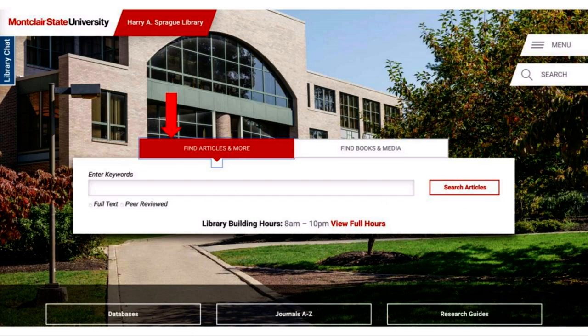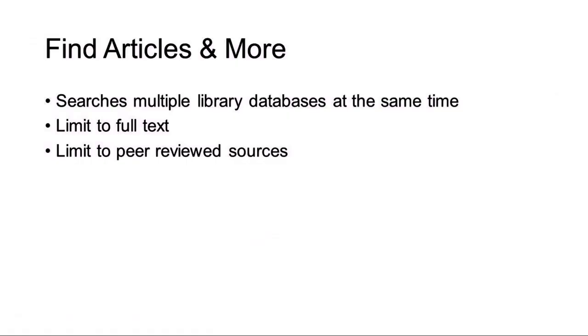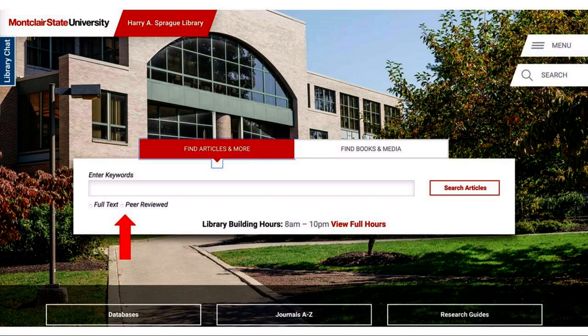On the library homepage you'll find two main search tabs. The default search is 'Find Articles and More.' Here you can search through multiple library databases at the same time, but remember you're not searching everything the library has access to. You can limit to full-text or limit to peer-reviewed sources.